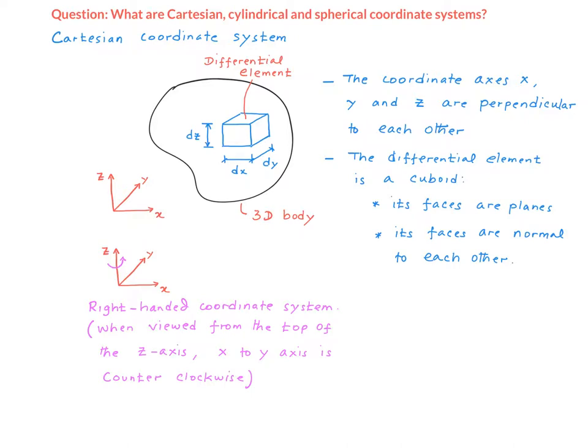So what are some of the basic characteristics of this coordinate system? First, the coordinate axes x, y, z are perpendicular to each other. In other words, the angle between these axes are 90 degrees.